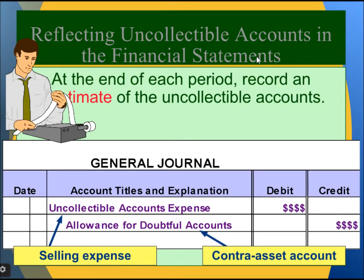Reflecting uncollectable accounts in the financial statements: at the end of each period, we record the amount of uncollectable accounts. Uncollectable account expense is an expense account (debit side), and allowance for doubtful accounts is a contra asset account (credit side). A contra asset account has a credit balance, whereas a normal asset account has a normal debit balance.